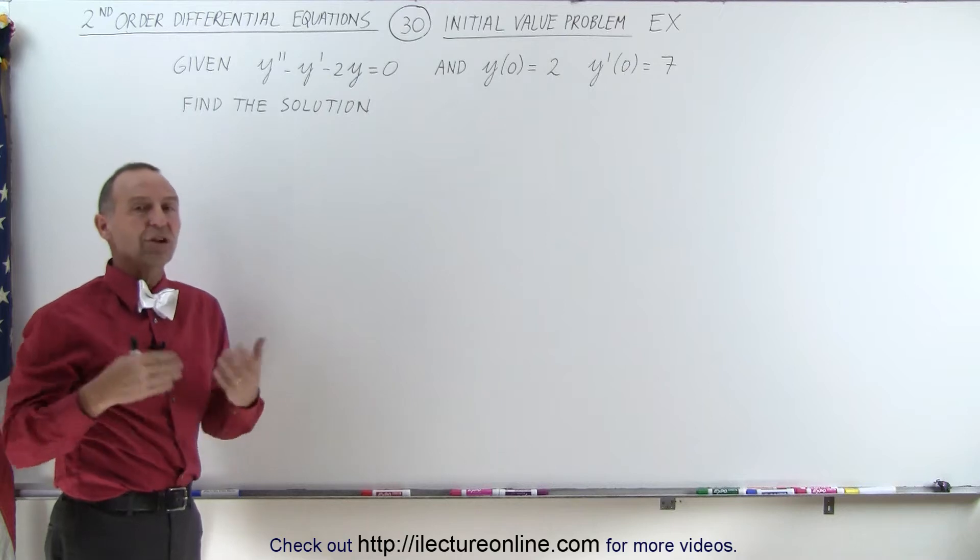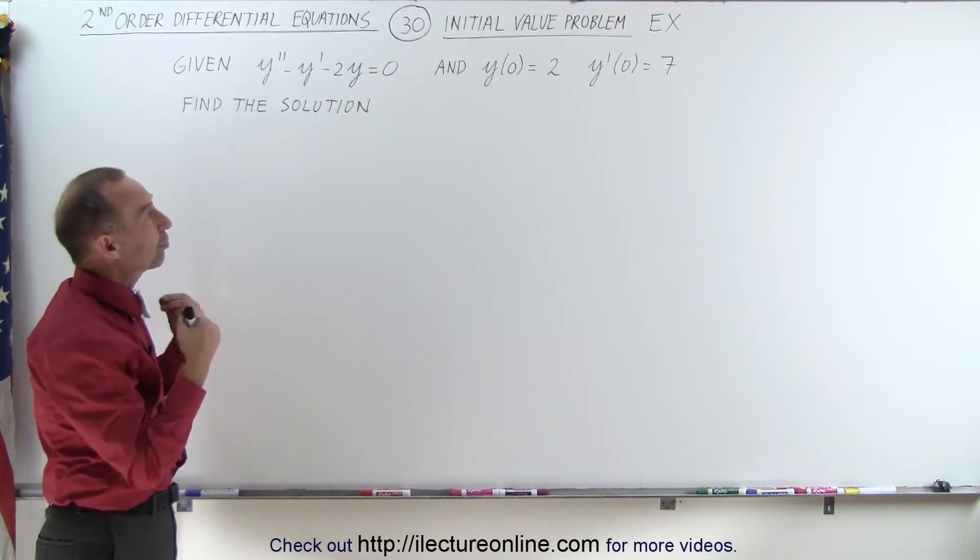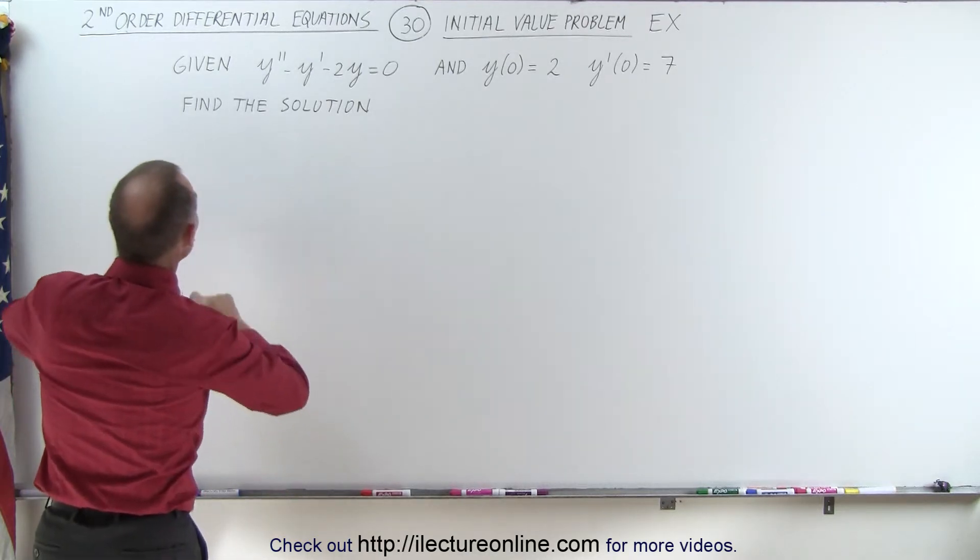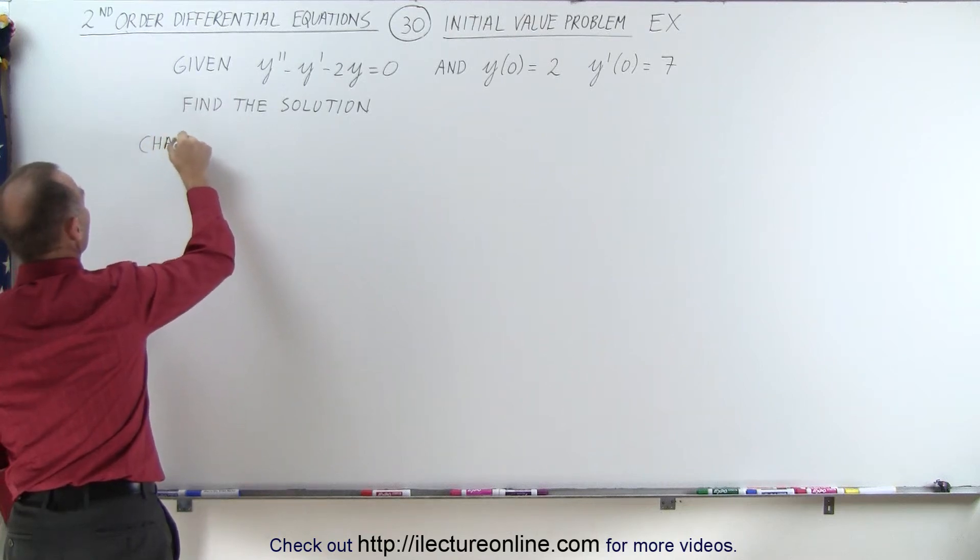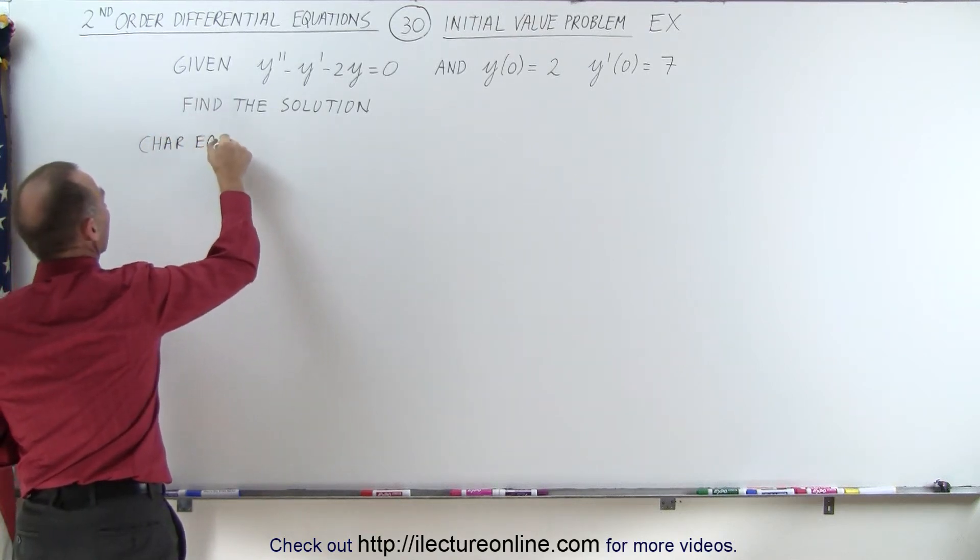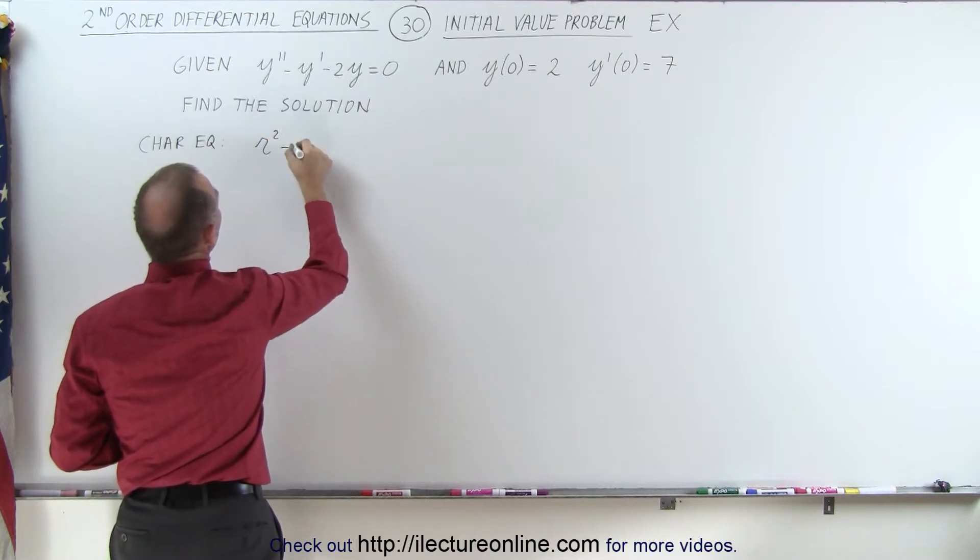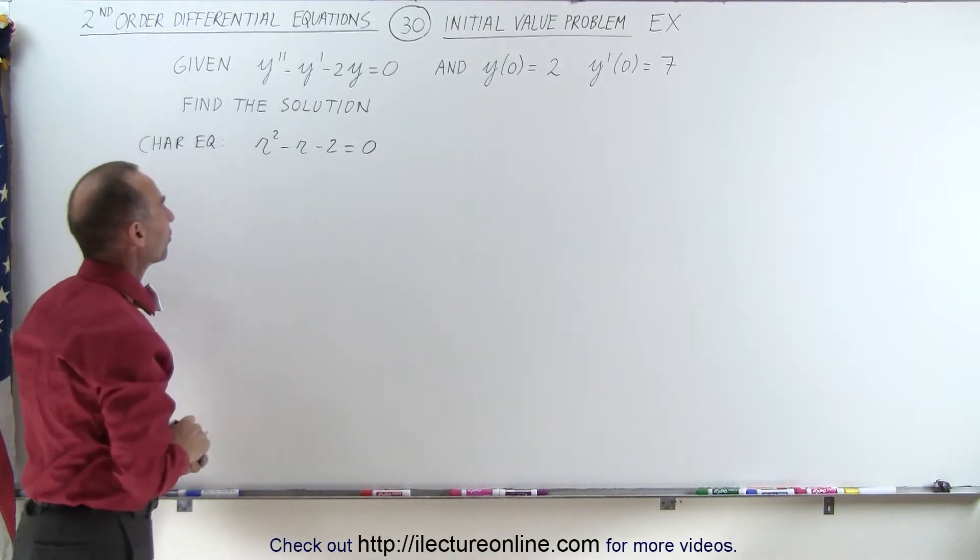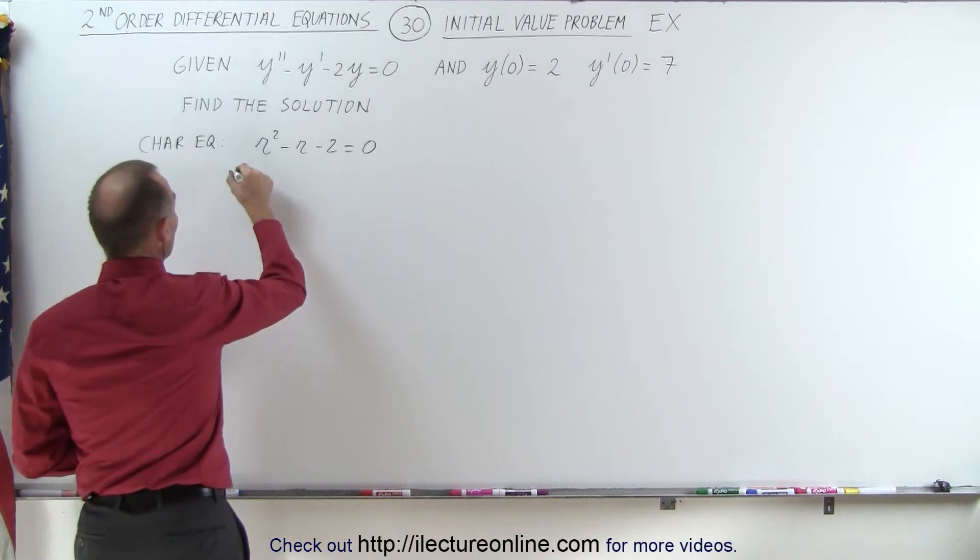We first are going to find the general solution with the constants c1 and c2, and then we'll solve for those constants using those initial values. So we use the characteristic equation, and that will look as follows. We have r squared minus r minus 2 equals zero, and we'll solve for the roots in this case. So it looks like we can probably factor this one. So let's try that.